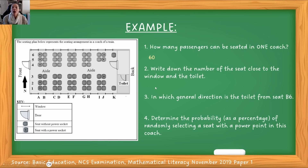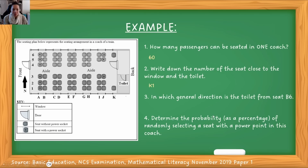Write down the number of the seat closest to the window and toilet. If I look here, on this side the closest to the toilet is this one, and here's a window there and the toilet here. So the answer would be K1. Again, we're only looking at the information that's being given.